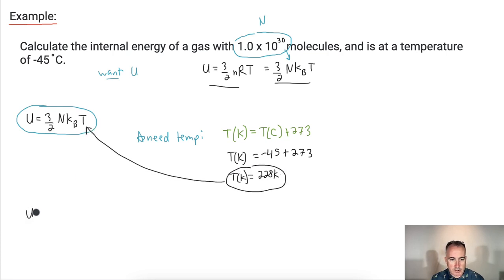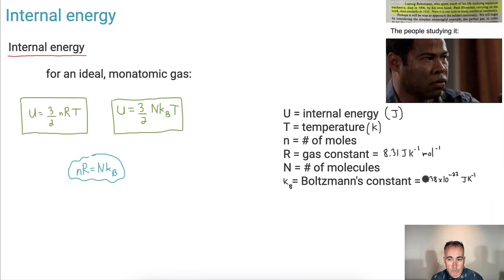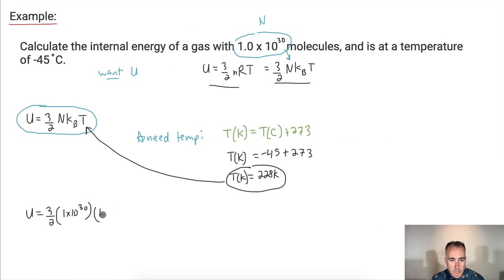Finally, I'll just put it all together. So U equals three halves, I'll just write down everything I'm going to need on my calculator here, times the number of molecules, so it's 1 times 10 to the 30. Then I need the Boltzmann's constant. I can look it up, so that's 1.38 times 10 to the minus 23. And don't forget to put your temperature in Kelvin, so 228.